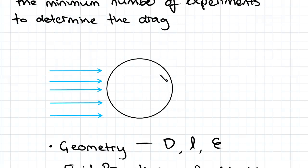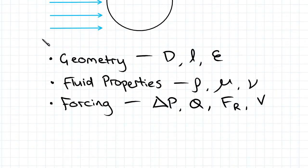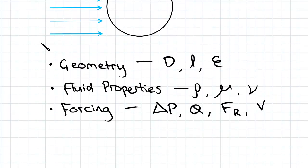So previously we identified three groups from which we could choose variables from: geometry, fluid properties, and forcing. In our case we are trying to find the drag force so we've got one variable in the forcing group, which is this one here.